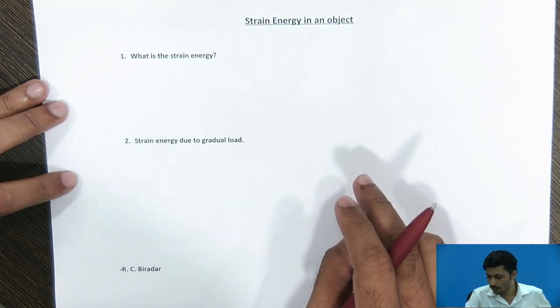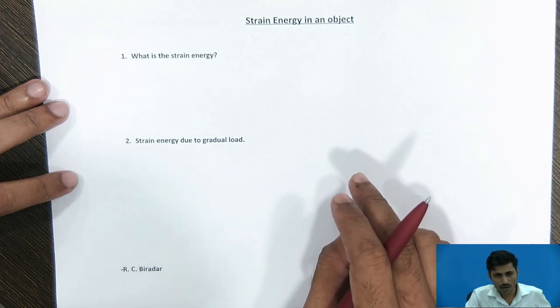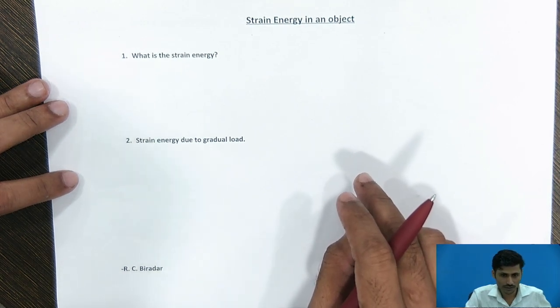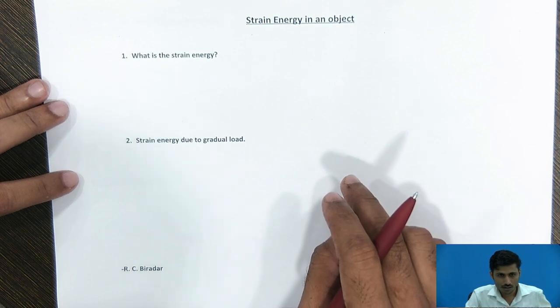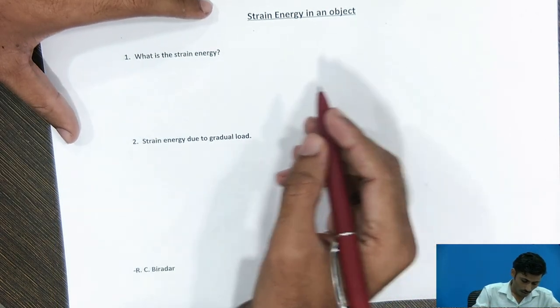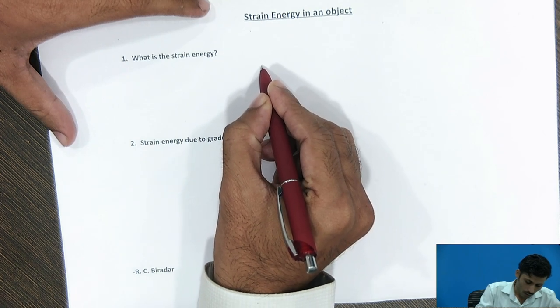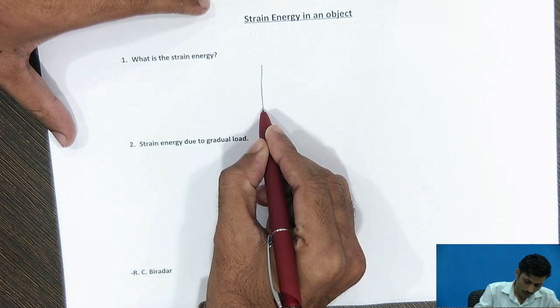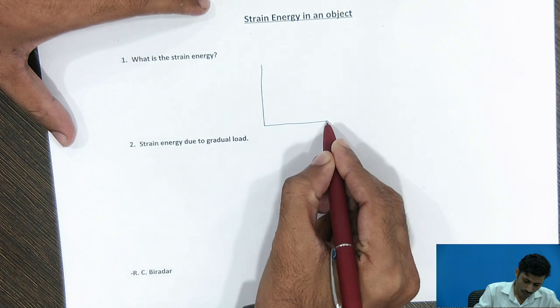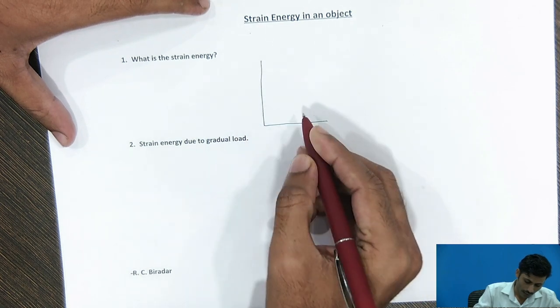The amount of energy will differ with gradual, sudden and impact type of loading conditions on a body. Now, let us know what is the strain energy in gradual load by plotting a graph of stress versus strain curve for a ductile material.